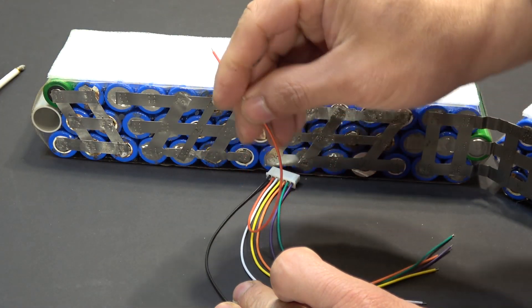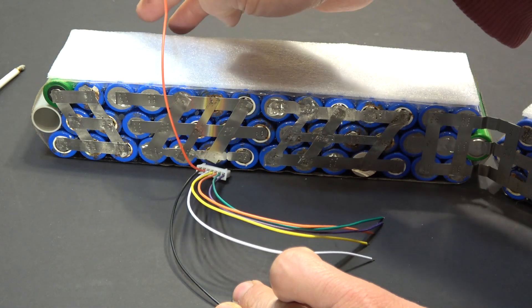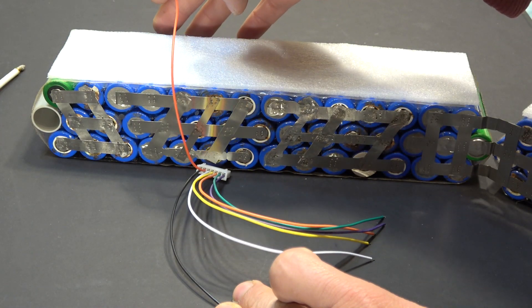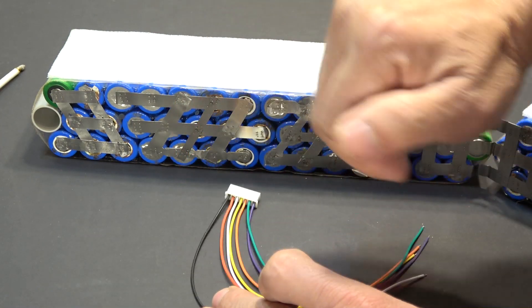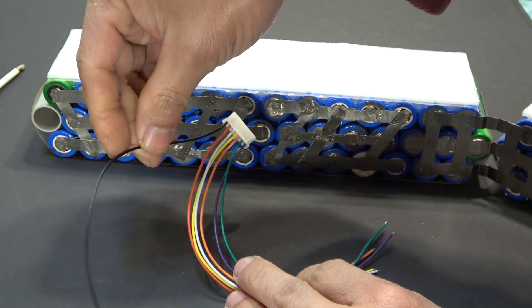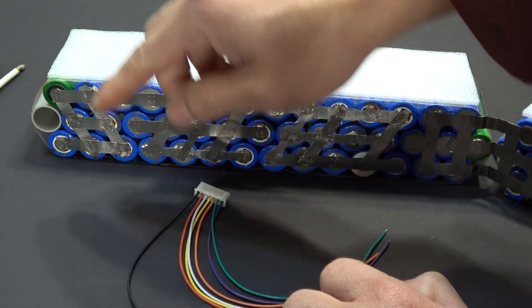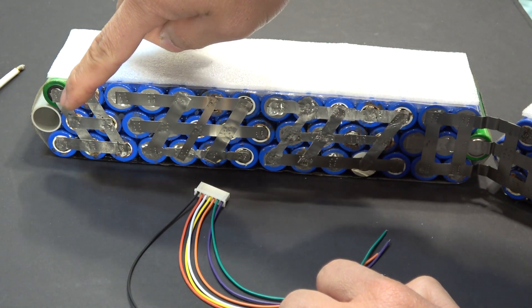The sixth cable, the red cable is going to go onto the positive terminal of the fifth battery and the black cable, the last cable is going to go on the positive terminal of the last battery.